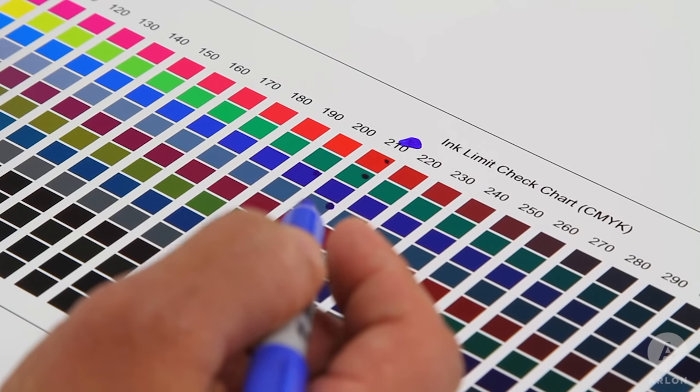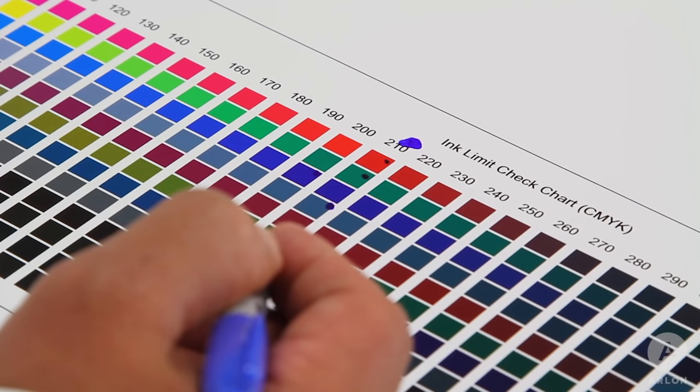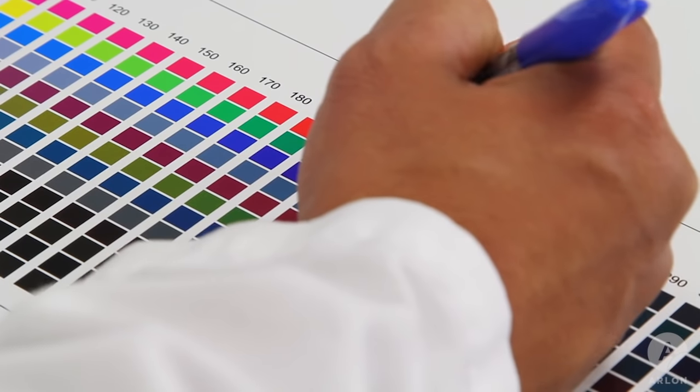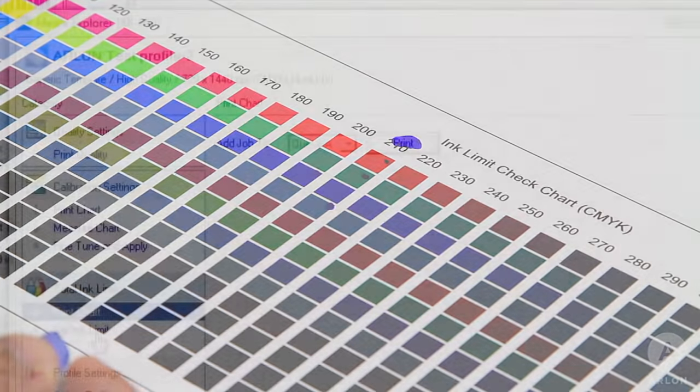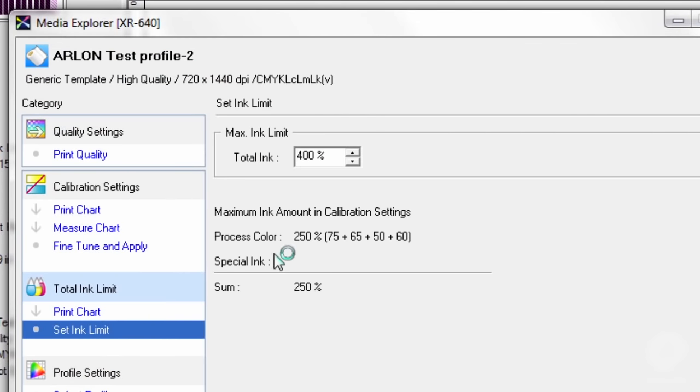On this chart, we have identified 210 as the ideal ink limit. In VersaWorks, enter the adjusted total ink limit.